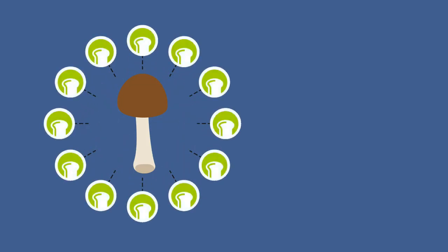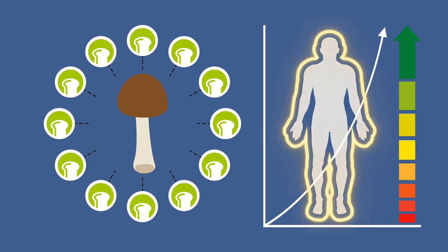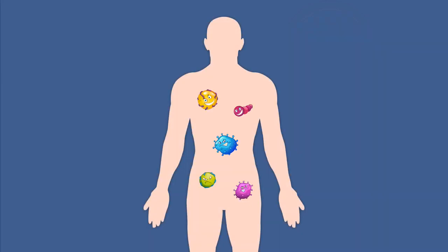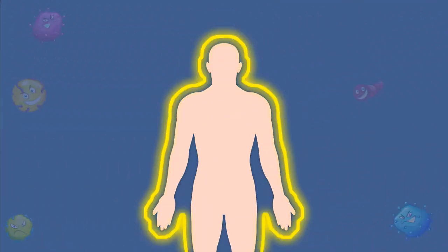ABM mushrooms contain polysaccharides that help boost our immune systems by increasing the total number of immune cells in our bodies. Immune cells help fight and kill cancer cells, so a greater number of immune cells can lead to a lower number of cancer cells.